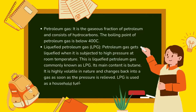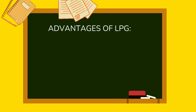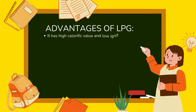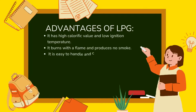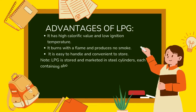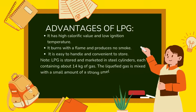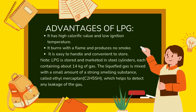Liquefied petroleum gas (LPG): petroleum gas gets liquefied when subjected to high pressure at room temperature. Its main content is butane. It is highly volatile and changes back into gas as soon as pressure is relieved. LPG is used as a household fuel. Advantages: it has high calorific value and low ignition temperature, burns with a clean flame producing no smoke, and is easy to handle and store. LPG is stored in steel cylinders each containing about 14 kg of gas. A small amount of ethyl mercaptan (C₂H₅SH) is added as an odorant to help detect leakage.